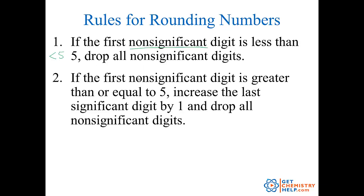Rule two says if the first non-significant digit is greater than or equal to five, then we will increase the last significant digit by one, but still drop all of the non-significant digits.